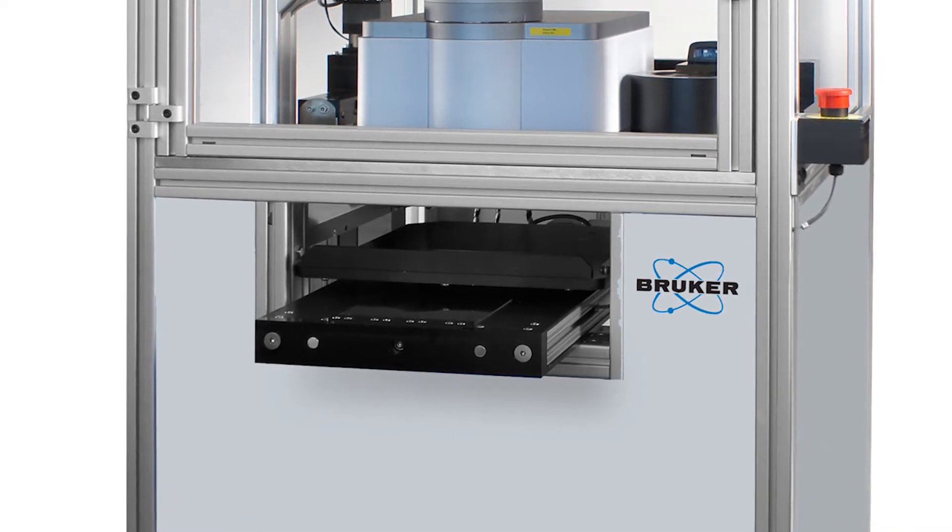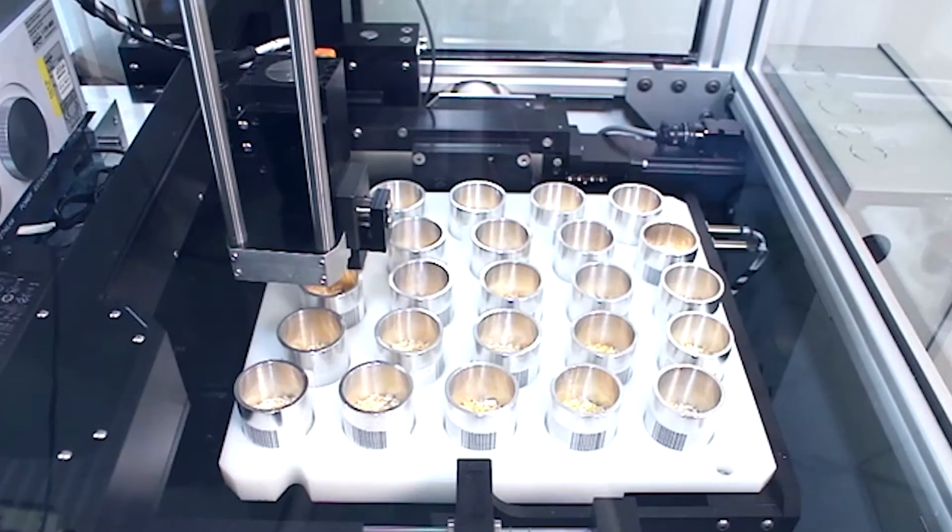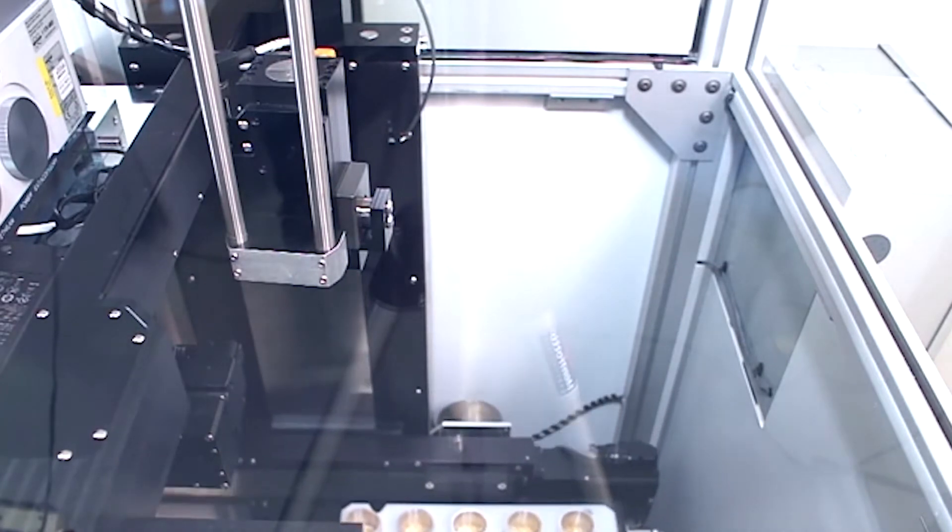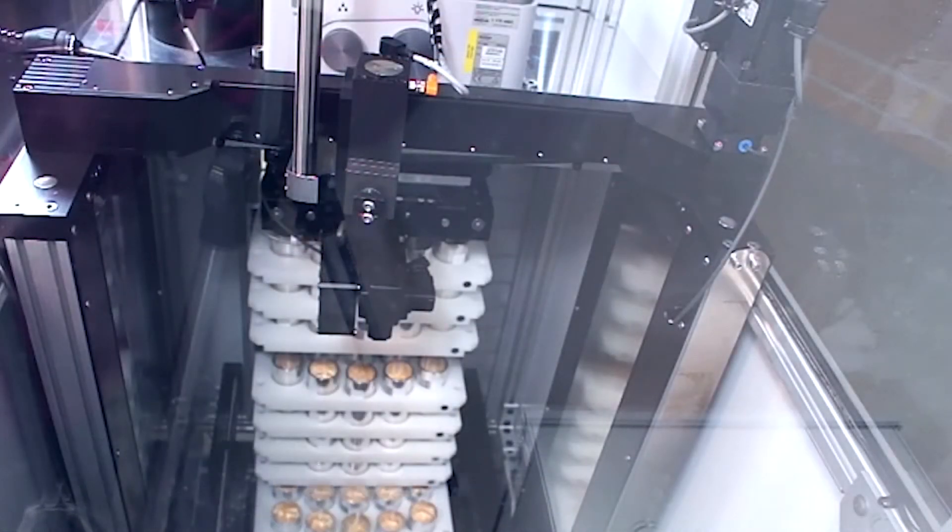The advanced version adds an automated tray loader to the basic configuration. The loader extends the tray holder on receipt of the load tray command. When the tray with sample cups is placed on the tray holder, the sample tray is pulled into the Auto Sampler and stored in the first available storage slot.